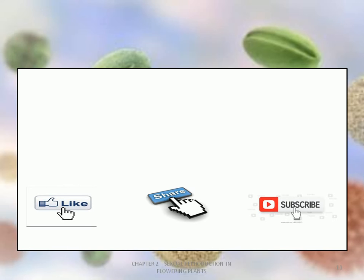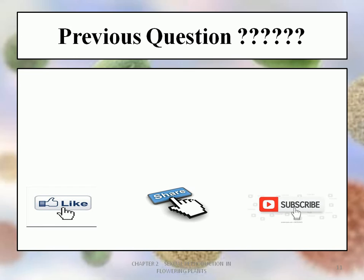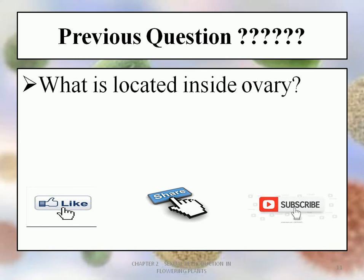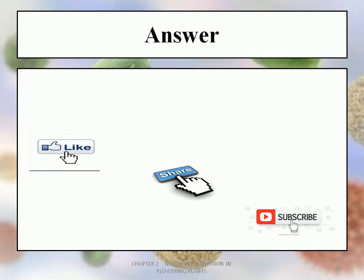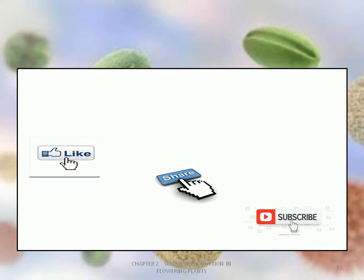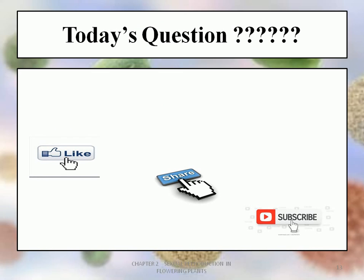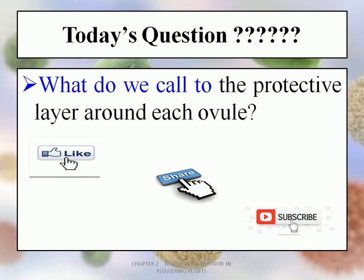Now it's time to answer the previous question. What was the previous question? The question was: what is located inside the ovary? The answer is the ovarian cavity. Today's question is — note it down: what do we call the protective layer around each ovule? The protective layer around each ovule is called what? Answer me in the comment section below.